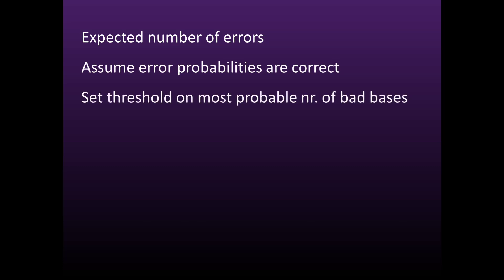The most effective approach is to calculate the expected number of errors. This approach assumes that the error probabilities in the Q-scores are correct, and sets a threshold on the most probable number of bad bases in the entire read. The most natural and conservative approach is to keep only reads for which the most probable number of errors is zero.